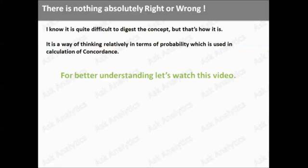Actually, there is nothing absolutely right or wrong. It's a very difficult concept to digest. But, that's how we consider in terms of concordance. Let's try to think this way for a few minutes. Definitely, taking 0.5 cutoff is not wrong. But, that is used while we use classification matrix. Here, we think relatively. The way we have seen the example.